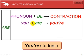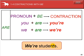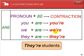You plus are is you're. The apostrophe takes the place of the letter A. You're students. We plus are is we're. We're students. The apostrophe takes the place of the A. They plus are is they're. They're students. Again, the apostrophe takes the place of the letter A.